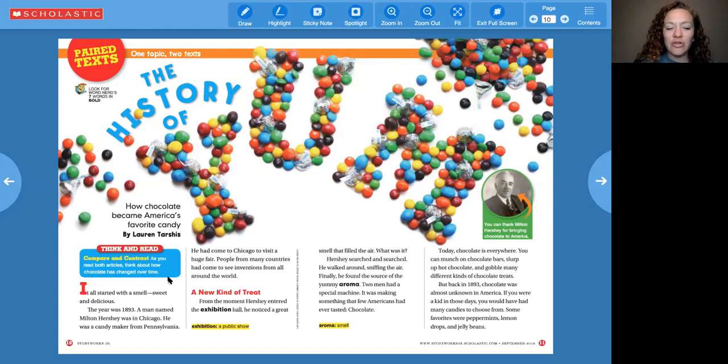The next subheading says a new kind of treat. That gives me an idea what the main idea of that next chunk is going to be. From the moment Hershey entered the exhibition hall, he noticed a great smell that filled the air. Pause. I see exhibition right here, a public show. That helps me know what those words mean. So keep an eye out for those bold words. What was it? Hershey searched and searched. He walked around sniffing the air. Finally, he found the source of the yummy aroma. Pause. That means smell, according to these bold words. Two men had a special machine. It was making something that few Americans had ever tasted. Chocolate.